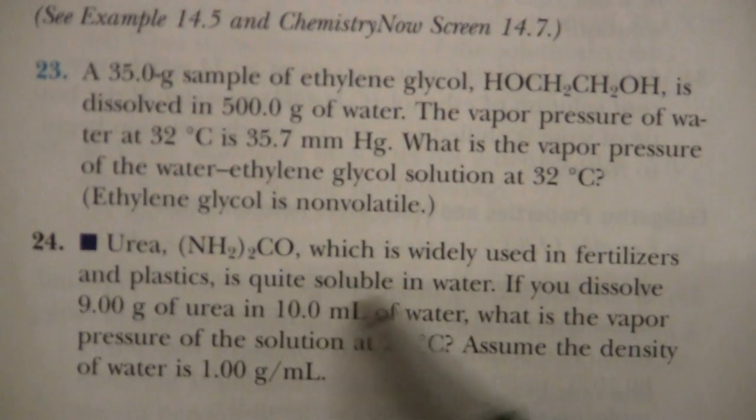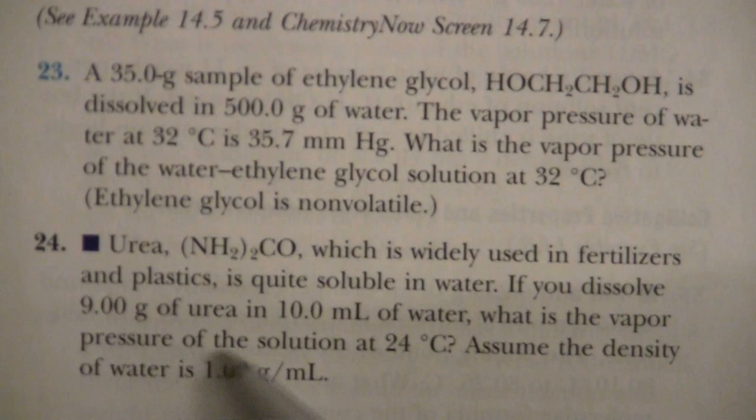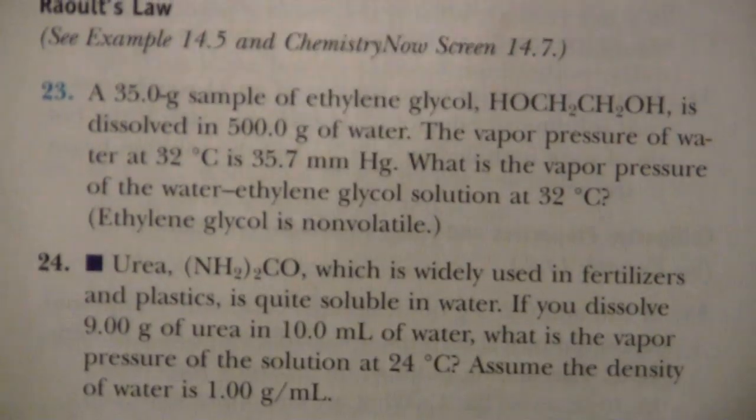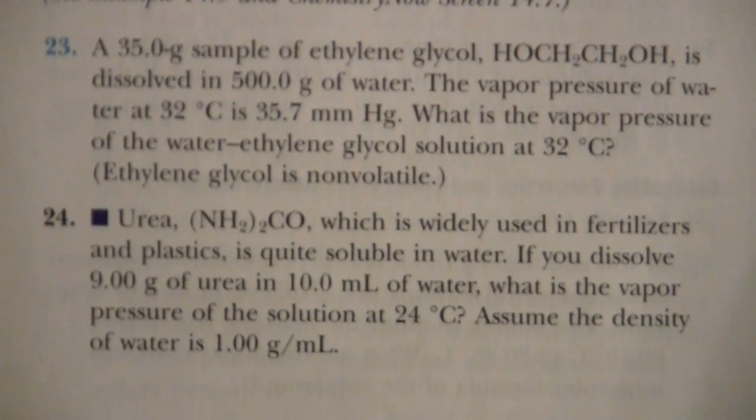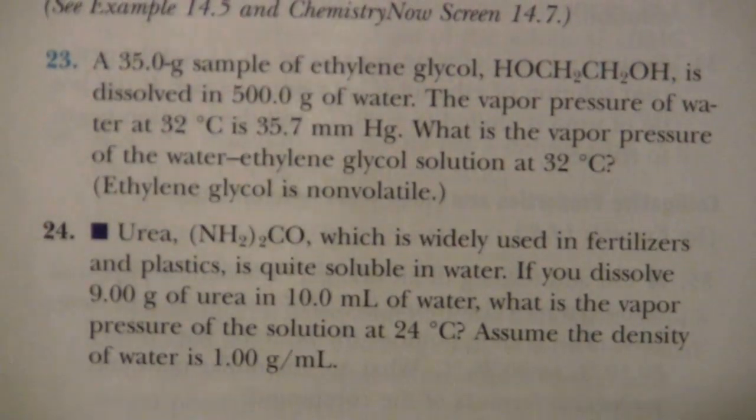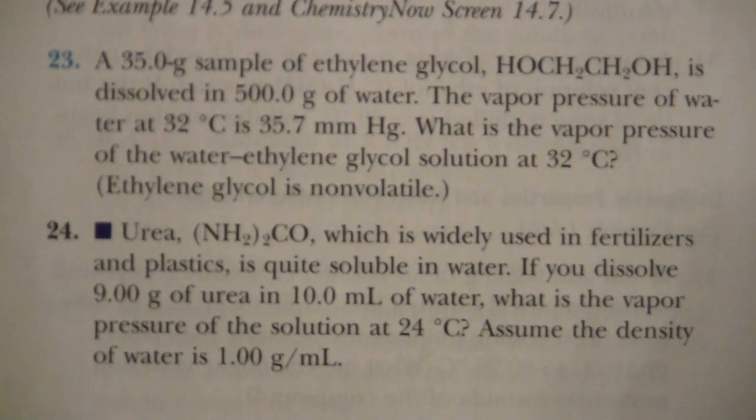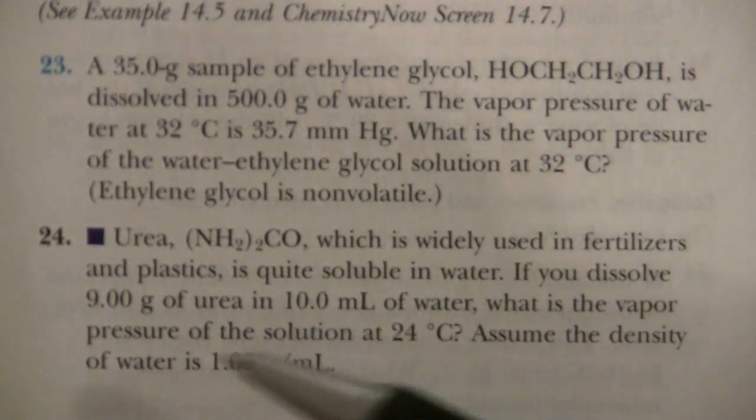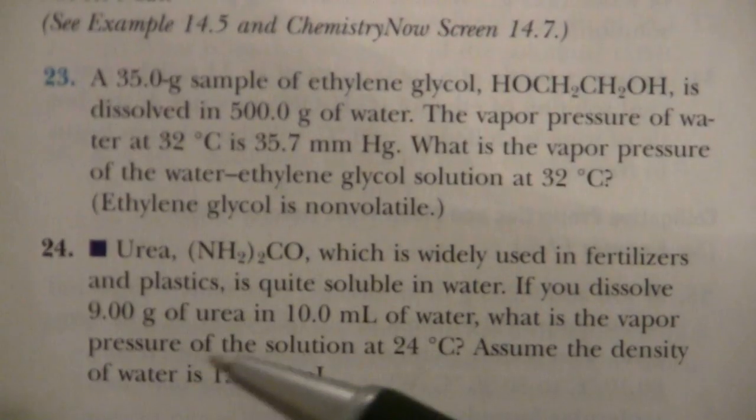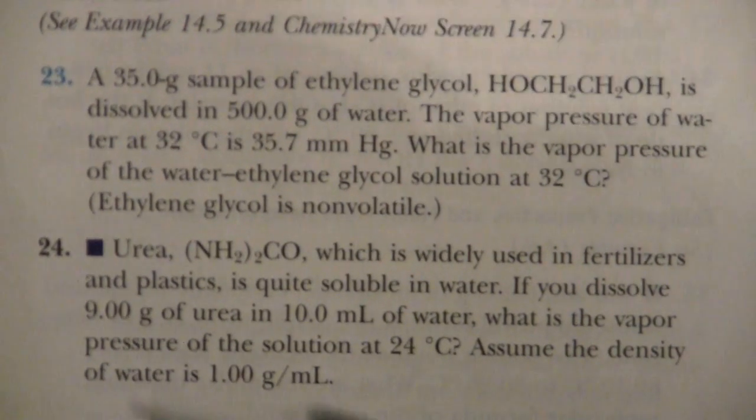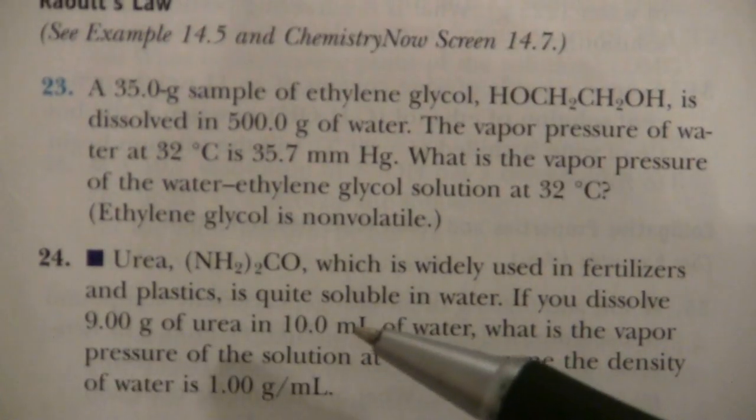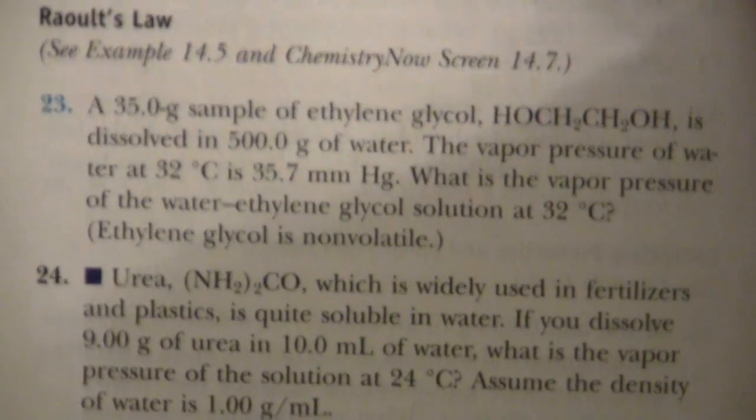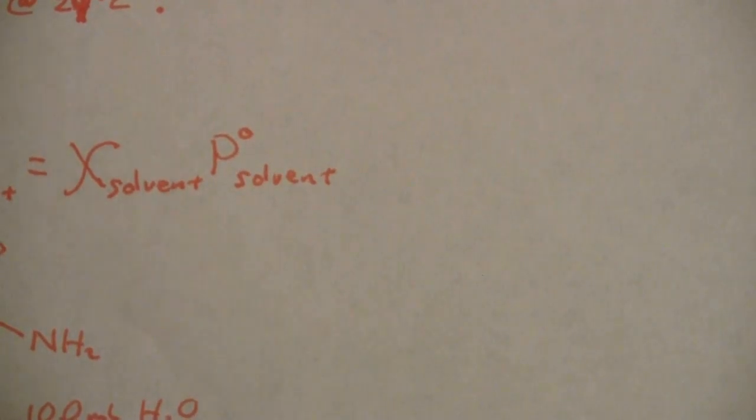So here we have a solute and a solvent, and we're asking about the vapor pressure of that solution. When it says vapor pressure of the solution, it's talking about the vapor pressure exerted by the solvent under the solution conditions. We have a change in vapor pressure that is going to be happening when we add the urea to the water.